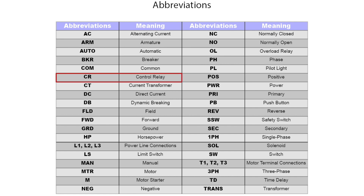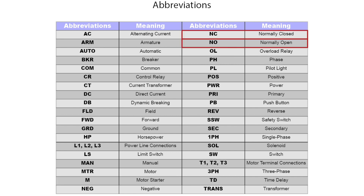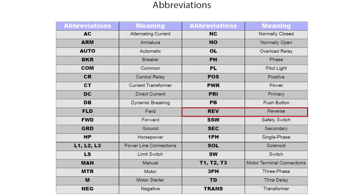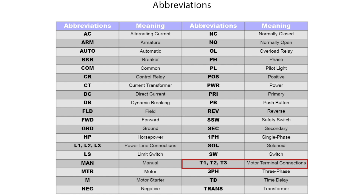Some of the abbreviations we will see are: CR, which stands for control relay; FWD for forward; L1, L2, L3 for power line connections; M for motor starter; NC for normally closed and NO for normally open — these are the abbreviations for your basic contacts; OL for overload relays; PL for pilot light, sometimes also referred to as indicating light; PB for push button; REV for reverse; SOL for solenoid; and T1, T2, T3 for motor terminal connections. It is important to learn what the abbreviations stand for as this will make it easier to understand electrical diagrams.